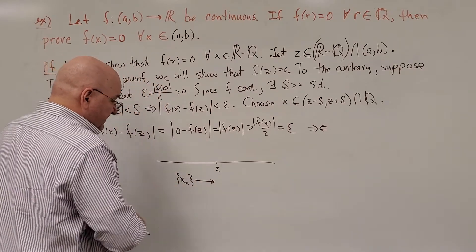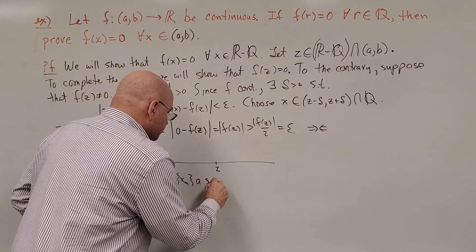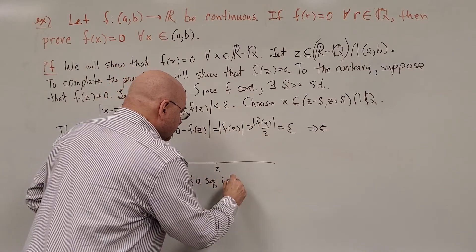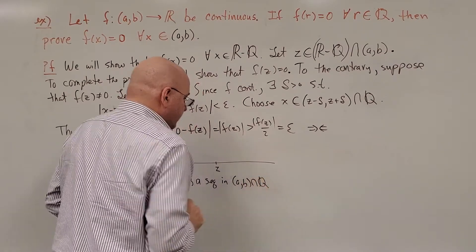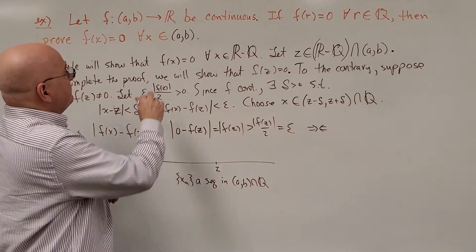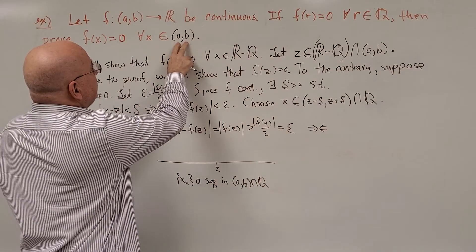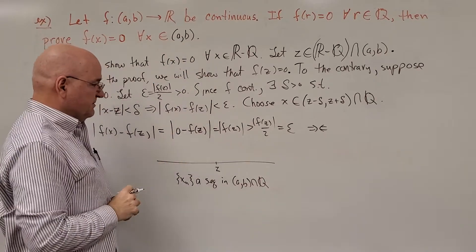be a sequence. Let me write this first. Let it be a sequence in (a,b) intersected with the rationals. So all that's saying is let x_n be a sequence in here that's a sequence of rational numbers that converges to z.